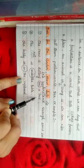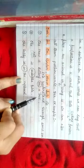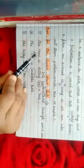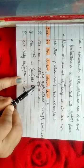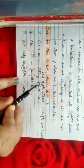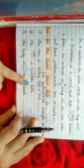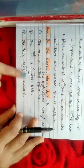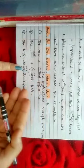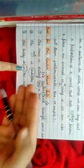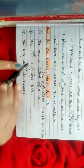Let's see examples. The crow is on the tree. Kauwa ped par hai. The nouns are crow and tree, and the word showing their relationship is 'on'. Next example: the rat is under the table. Chuha table ke neeche hai. Under ka matlab hota hai neeche. So under is the preposition showing the relationship between rat and table.